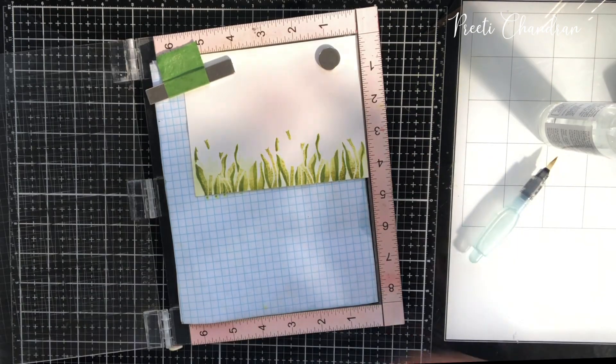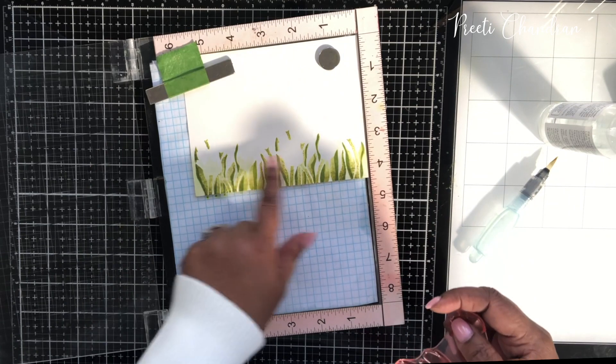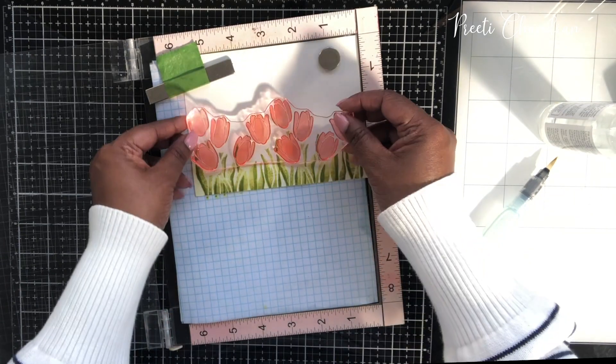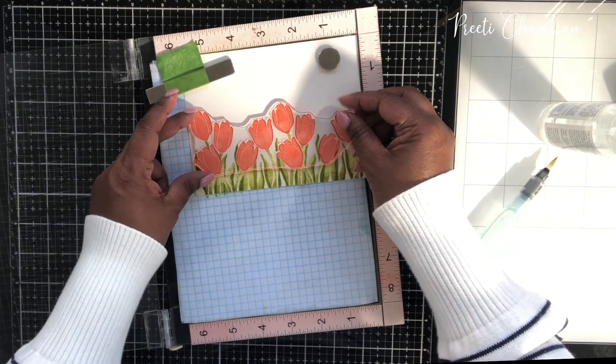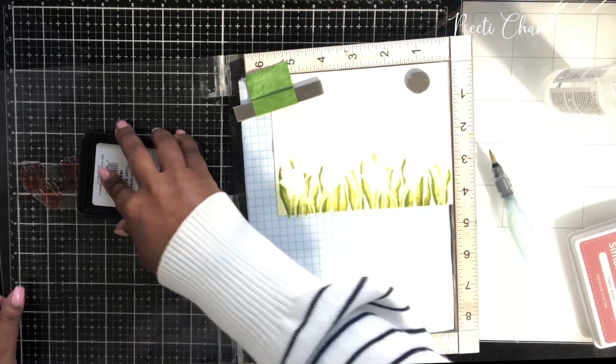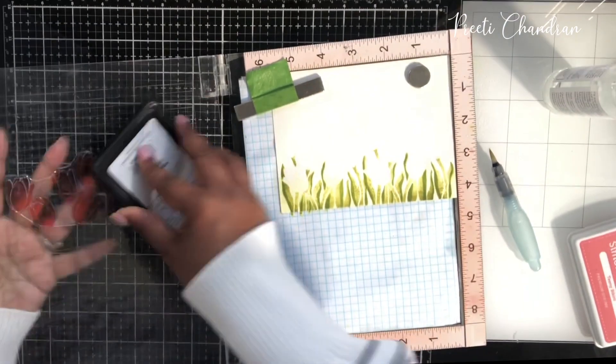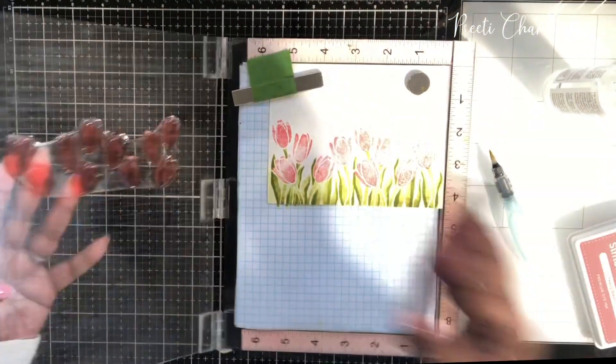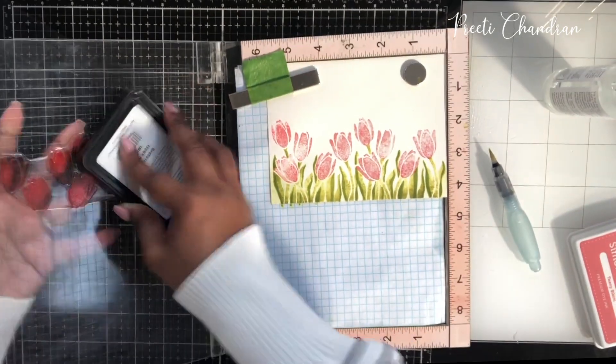Now I'm using the tulip, the flower itself. This also is two layers and it easily fits within the gaps of those leaves. It's a beautiful, easy stamp layering set which anyone can do. Seriously.